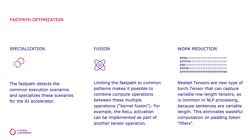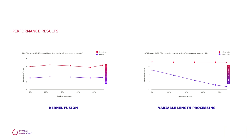With Better Transformers, we use a new type of tensors — nested tensors — which enable each row in a tensor to have a distinct sequence length. This enables us to accommodate batches consisting of a mix of short and long sentences and perform exactly the computations necessary for each sentence, skipping the processing of the padding token fillers.